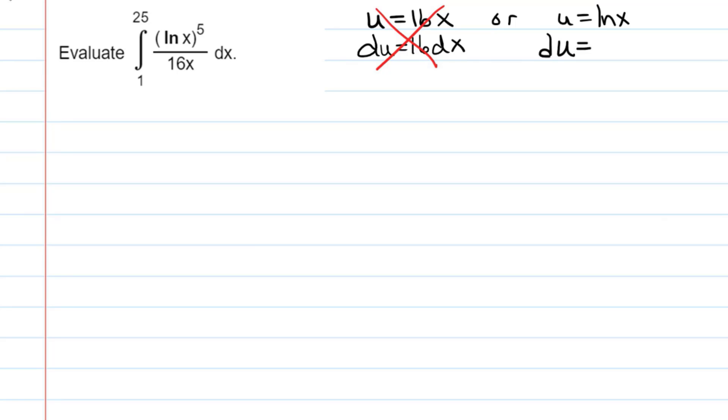I'm going to try letting U be natural log of x. So that means that du would have to be 1 over x dx. And the way I like to think about it is I look at my original integral and I try rewriting it, where I separate out these quantities, the U and the du.